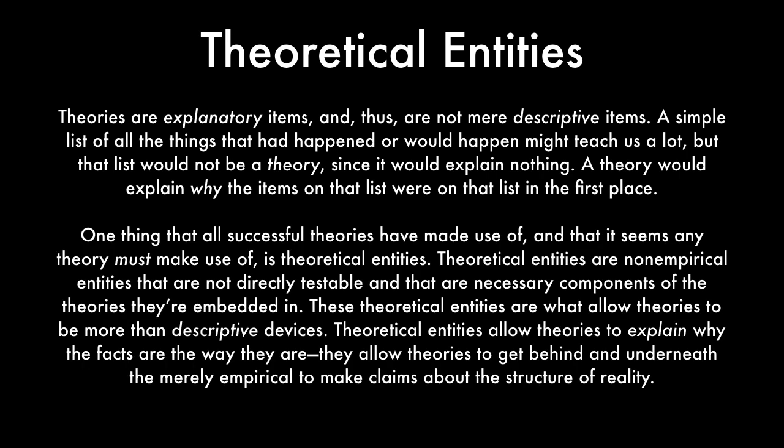A theory would explain why the items on that list were on that list in the first place. One thing that all successful theories have made use of, and that any theory must make use of, is what's known as theoretical entities — non-empirical entities that are not directly testable and that are necessary components of the theories they're embedded in. These theoretical entities are what allow theories to be more than mere descriptive devices; they allow theories to explain why the facts are the way they are, getting behind the merely empirical to make claims about the structure of reality.